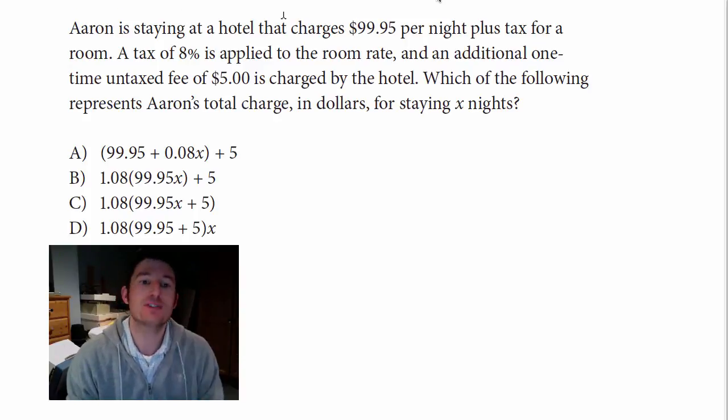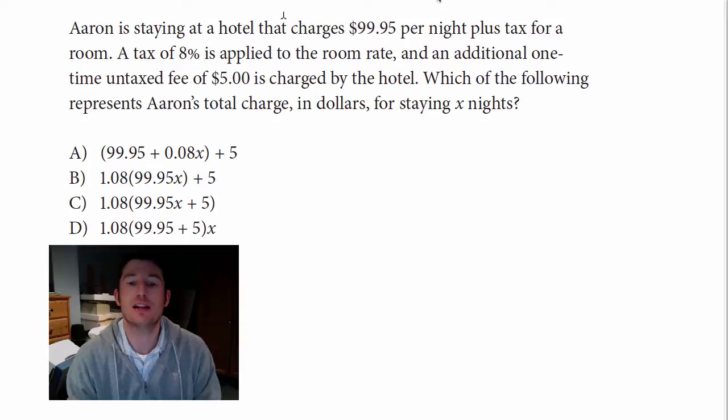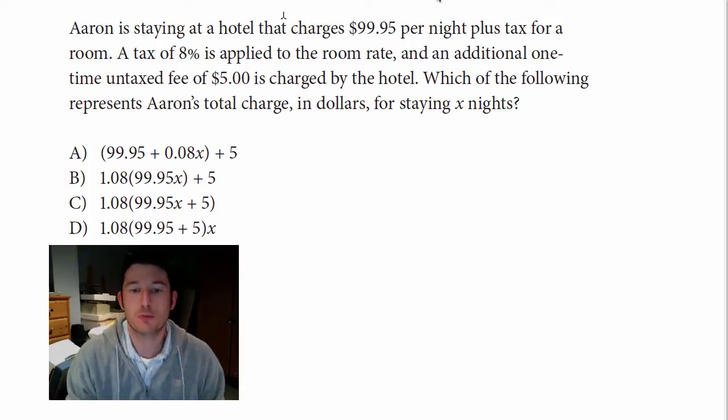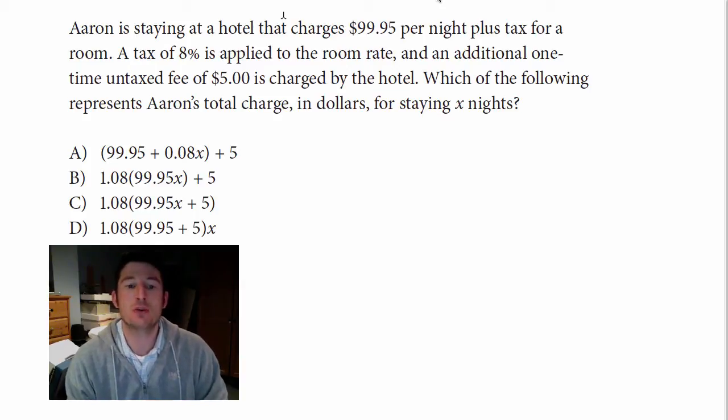It says, Aaron is staying at a hotel that charges $99.95 per night plus tax for a room. A tax of 8% is applied to the room rate and an additional one-time untaxed fee of $5 is charged by the hotel. Which of the following represents Aaron's total charge in dollars for staying X nights?